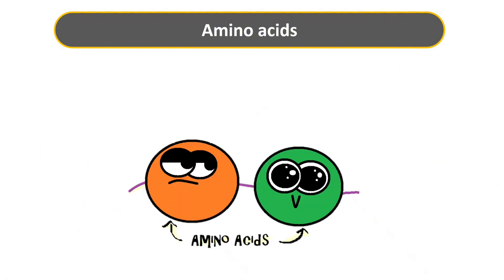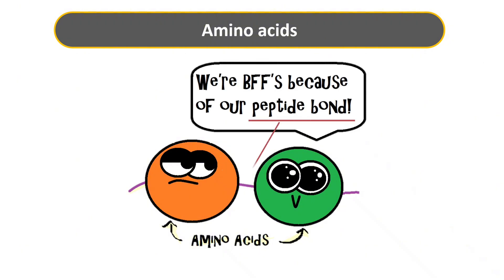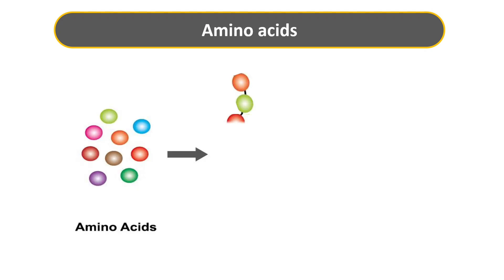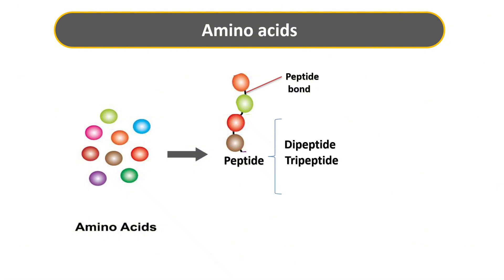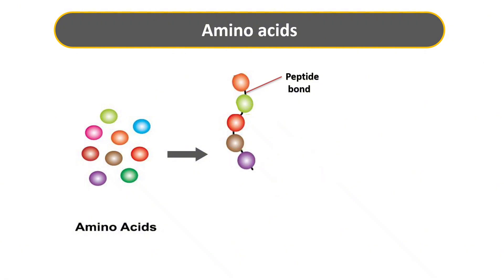Amino acids are best friends of each other. Just like best friends stay connected by the bond of friendship, amino acids stick together with a special and strong bond called the peptide bond. Any chain of amino acids linked by peptide bonds is called a peptide — which includes dipeptide with two amino acids, tripeptide with three amino acids, and oligopeptide which is a short chain of 2 to 10 or sometimes 20 amino acids. When many amino acids keep linking through multiple peptide bonds, the chain becomes a polypeptide.